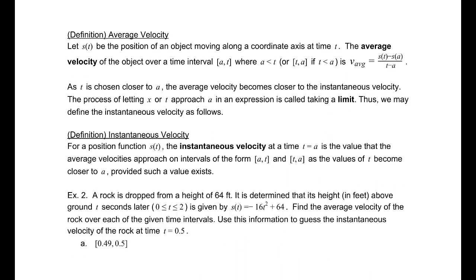Thus, we define the instantaneous velocity as follows. For a position function s(t), the instantaneous velocity at time t = a is the value that the average velocities approach on intervals of the form (a, t) and (t, a). They must be the same, actually, as the values of t become closer to a, provided such a value exists.